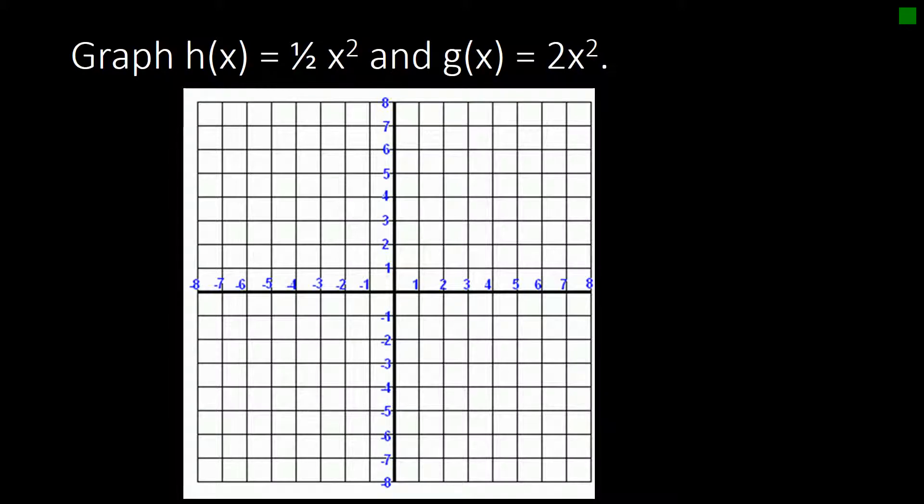So let's graph h of x equals 1 half x squared and g of x equals 2 x squared. And remember that we want to multiply each y-coordinate by c. So let's start off with graphing just plain old x squared. 0, 0 is an important point. 2, 4 is a point on the graph and negative 2, negative 4.